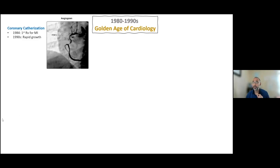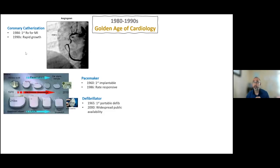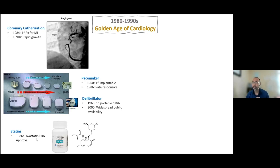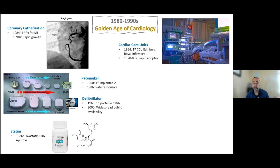The reason for this was a convergence of many developments during that time. Coronary catheterization reached its forefront, the 1980s saw the first treatments for MIs with rapid growth continuing into the 1990s, and there was incorporation of devices such as pacemakers and defibrillators. Medical treatments also became available — in 1986, lovastatin was the first statin drug approved by the FDA. Additionally, the infrastructure needed to deliver good cardiovascular care developed, including cardiac care units; the first CCU was established in Attenberg in 1964, with rapid adoption across the country through the 1970s and 80s.